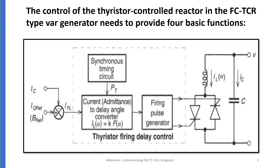Here we can see in this diagram this is our FCTCR. IC is a fixed current, wherein IL of alpha is varied by controlling the firing pulse. The required reactive power of the system is provided by controlling the reactive power of this TCR unit.